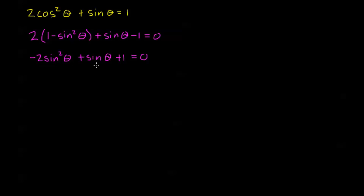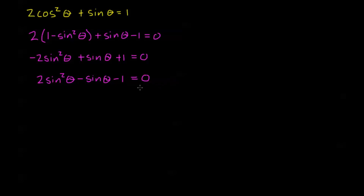I'm going to multiply both sides by negative 1. So negative 2 becomes positive 2 sine squared theta, positive sine theta becomes negative sine theta, positive 1 becomes negative 1, and on the right-hand side negative 0 is still just 0. Now we're in a great position to factor.